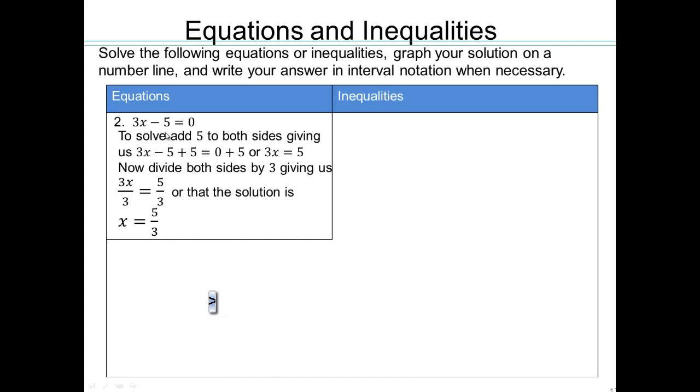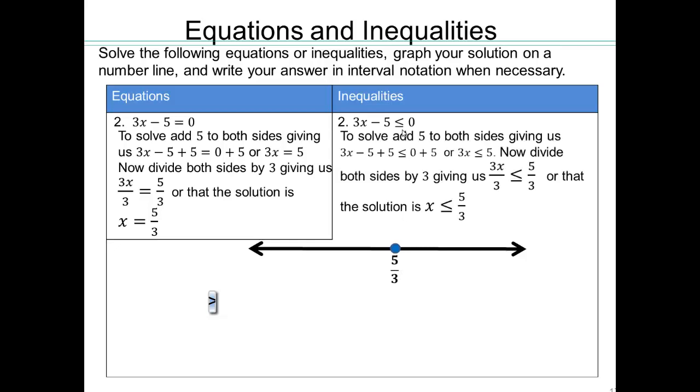So same thing. 3x minus 5 equals 0. So x equals 5 thirds. And so 5 thirds is the point on the number line, right? What if I wanted to solve this inequality, less than or equal to 0? Well, look what happens. So I have x less than or equal to 5 thirds, which is all that. So I can do it that way like I used to.